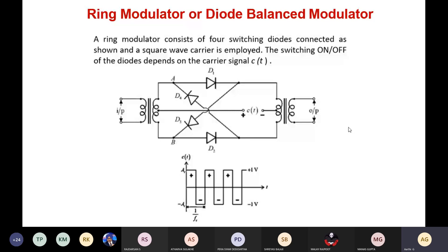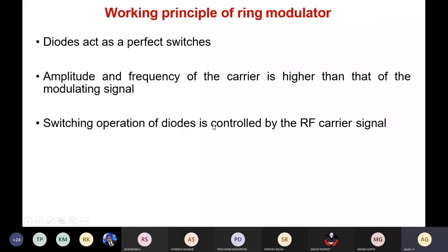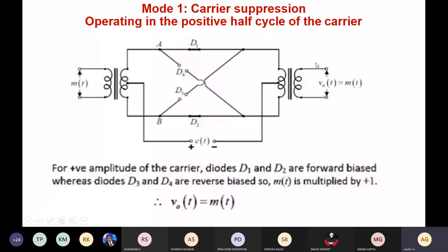The diodes act as perfect switches. The amplitude and frequency of the carrier signal is always higher than that of the modulating signal. The amplitude adjustment can be set based on the modulation index. The switching operation of the diodes is controlled by the RF carrier signal, operating in the positive half cycle of the carrier.